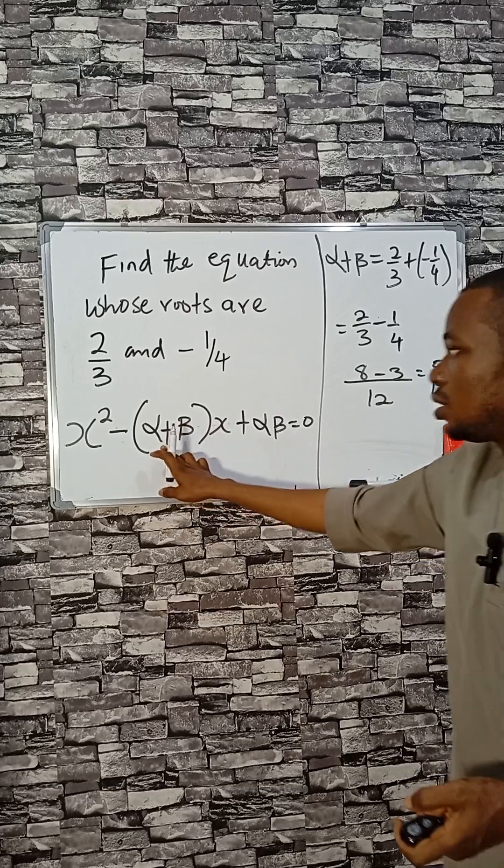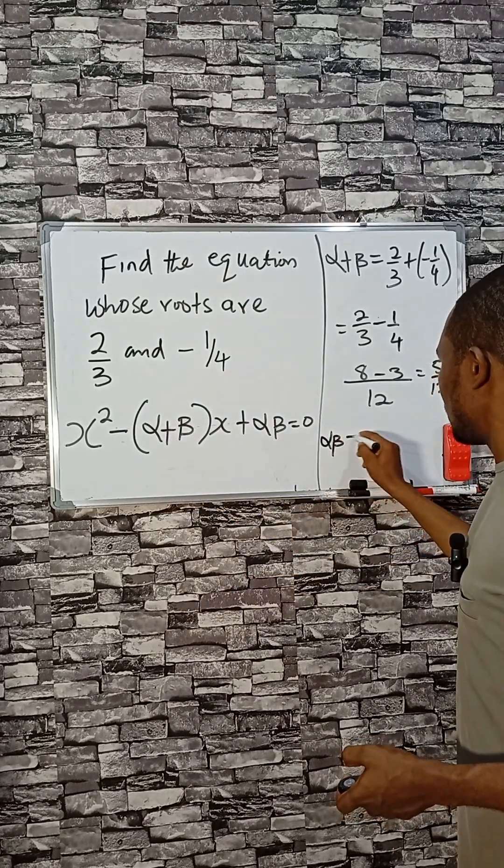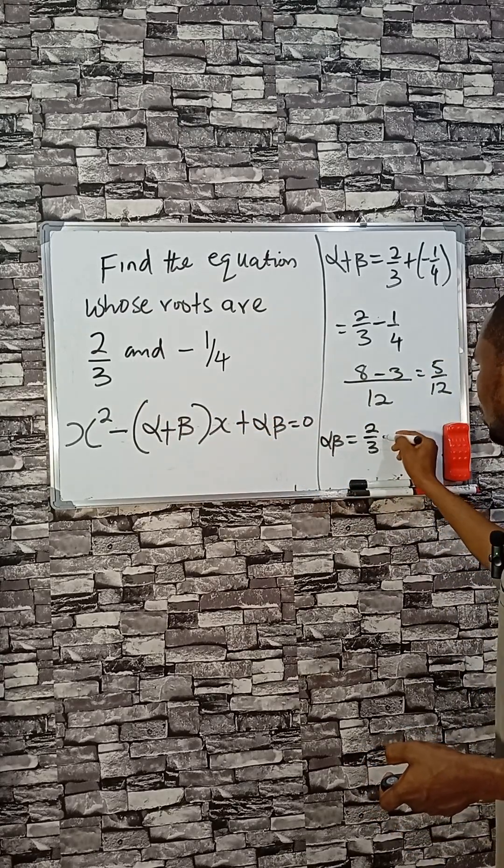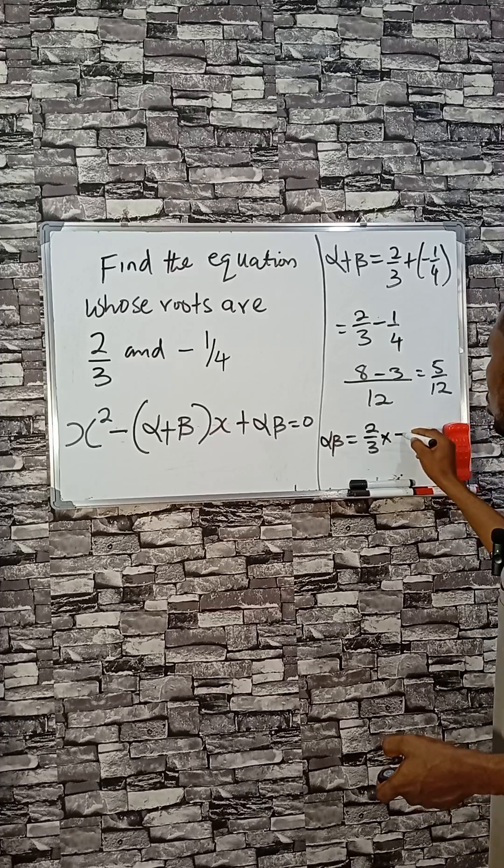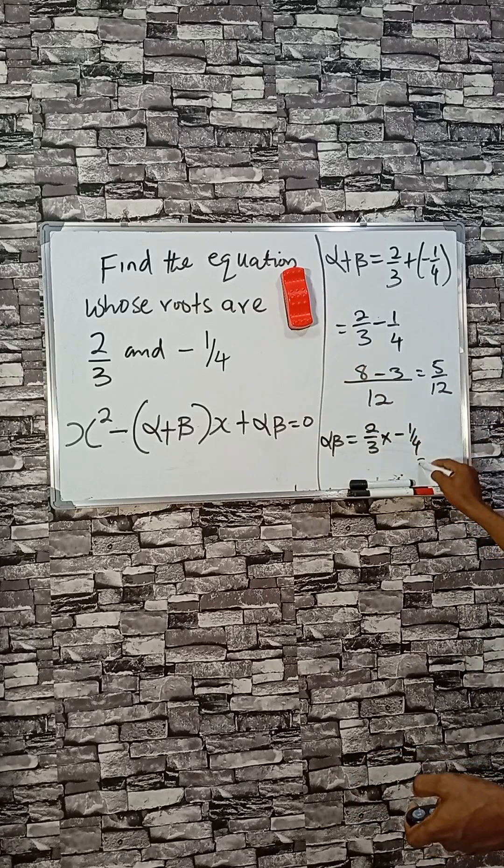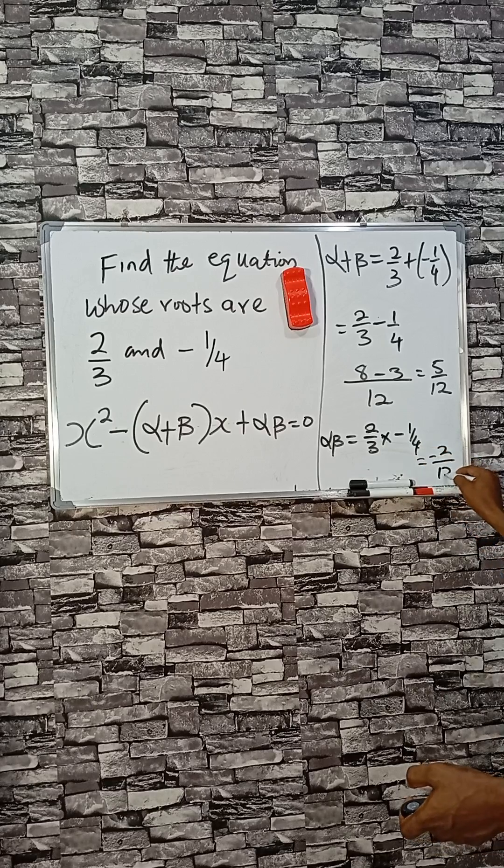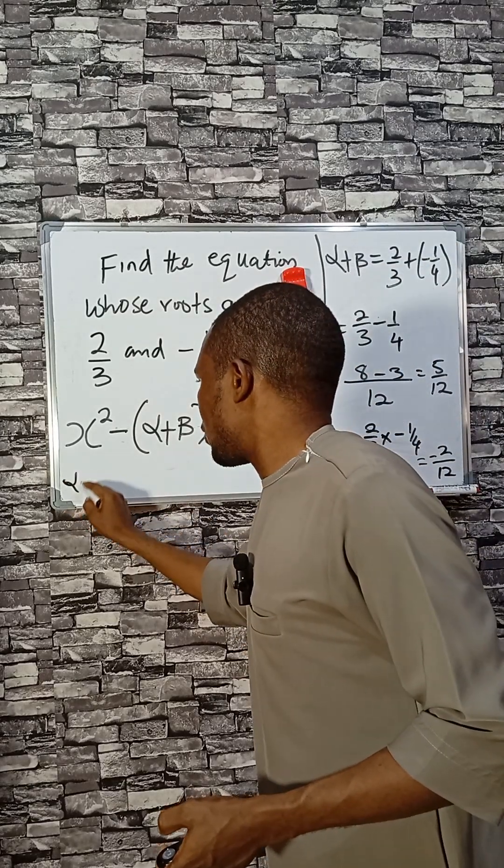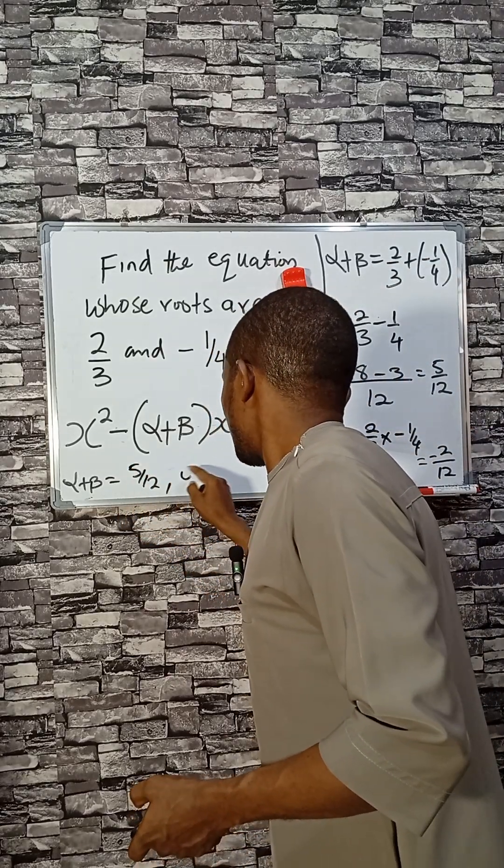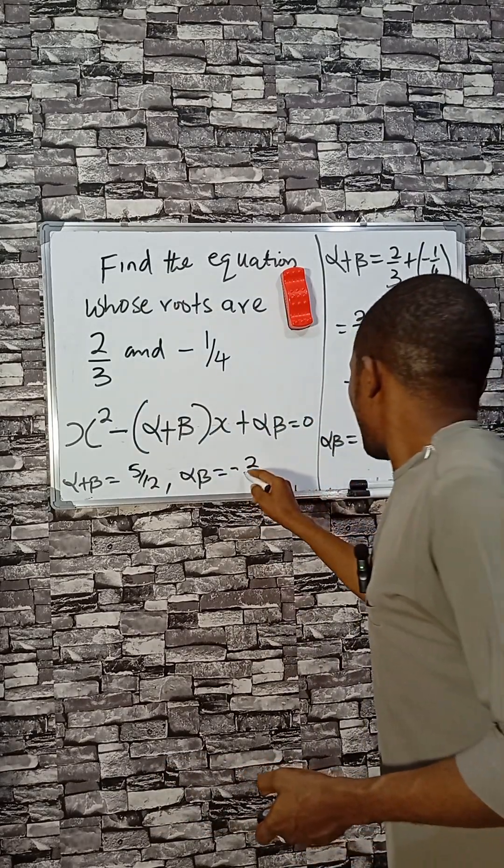Now let's check the product, which is αβ. When you multiply them: 2/3 times -1/4. Please don't forget the sign, very important. 2 times 1 is 2, and 3 times 4 is 12, so we have -2/12. The sum of roots α + β is 5/12, while the product αβ is -2/12.